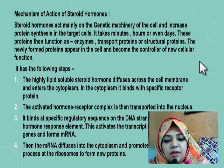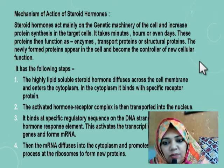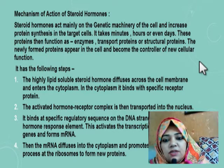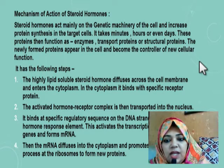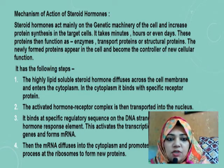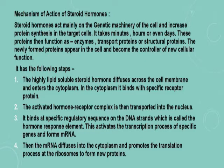The steps are as follows: First, the highly lipid-soluble steroid hormone diffuses across the cell membrane and enters the cytoplasm. In the cytoplasm, it binds with the specific receptor. Second, the activated hormone-receptor complex is then transported to the nucleus. Third, in the nucleus it binds at a specific regulatory sequence on the DNA strand called the hormone response element, which activates the transcription process of specific genes and forms messenger RNA. This third point is very important.